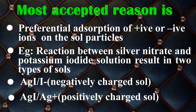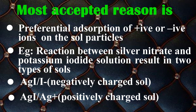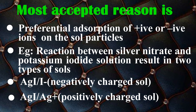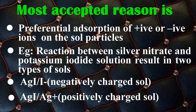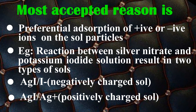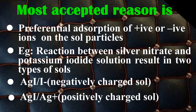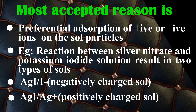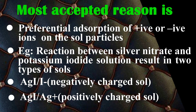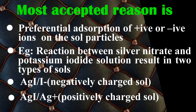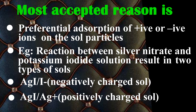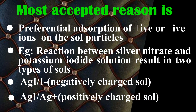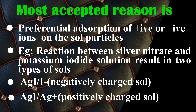The most accepted reason is preferential adsorption of positive or negative ions on the salt particles. We will explain this with the help of an example. Take the reaction between silver nitrate and potassium iodide solution. It results in two types of salts — one negatively charged and the other positively charged.